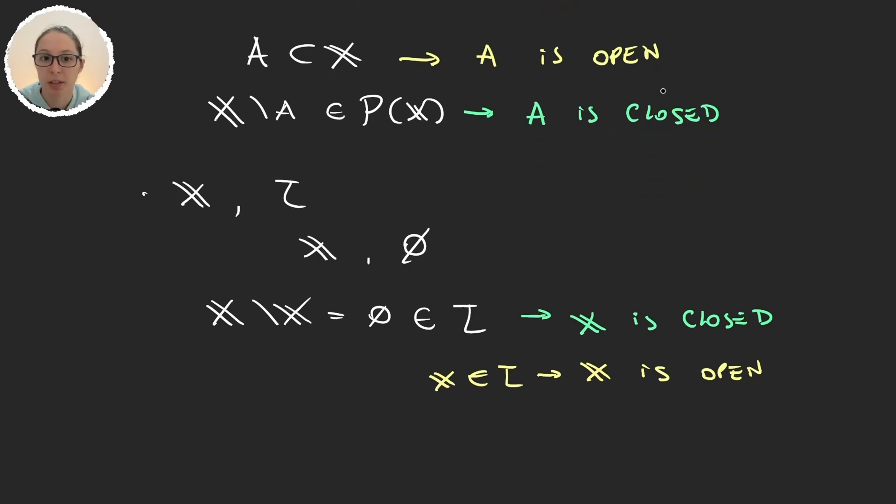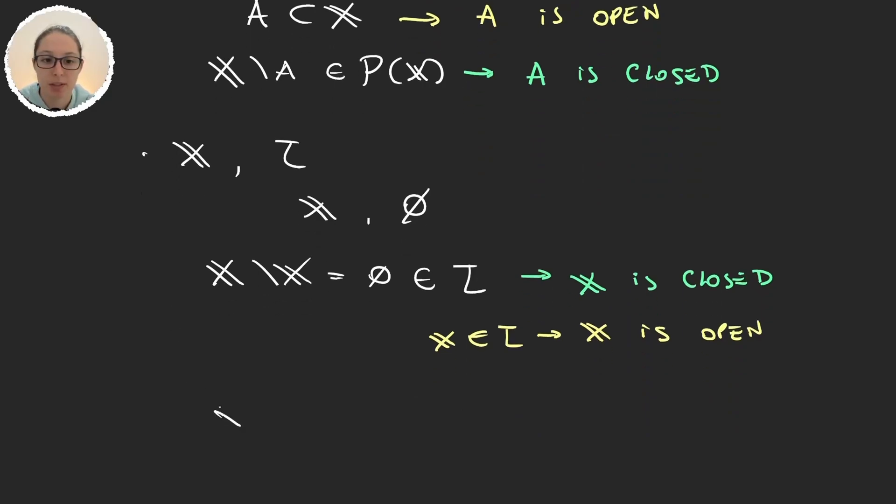And the same happens with the empty set. X minus the empty set is X and X is an element in the topology. So the empty set is closed. But again the empty set is also in the topology which shows us that the empty set is open.